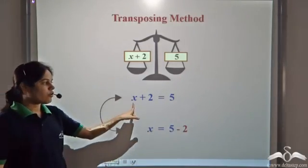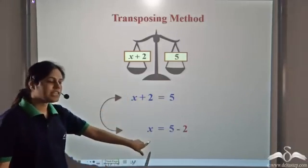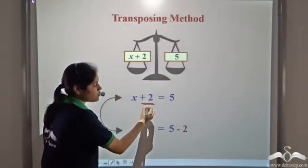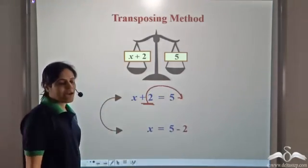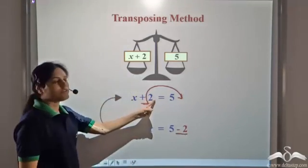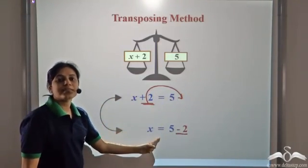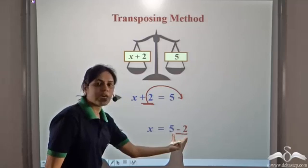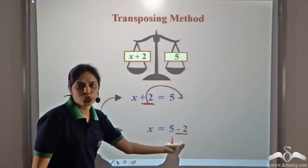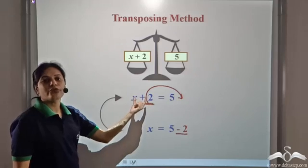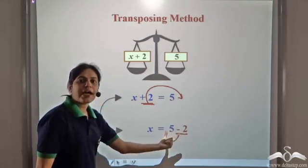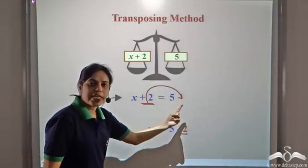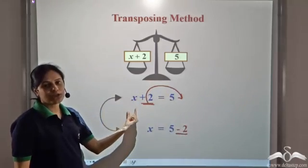From this step, we can come directly to this step. We have a plus 2 here. If we take it to the other side and write it as minus 2, the equation remains the same. This is called transposing. So we have transposed 2 from the left hand side to the right hand side and written it as minus 2. We can transpose a number from the left hand side to the right hand side, and also from the right hand side to the left hand side.